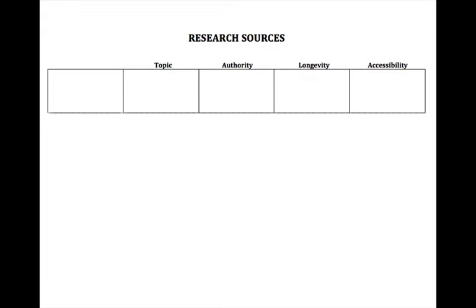Let's talk about different sources of research. We're going to discuss five areas, looking at each in terms of their authority, longevity, and accessibility. First, the broadest sense of research is reference books — encyclopedias, dictionaries, those basic text support materials you might reference to get a groundwork on your topic. It's probably not a good idea to use references only in a design, as they're fairly broad and general, so you're not getting a lot of depth on your specific topic.